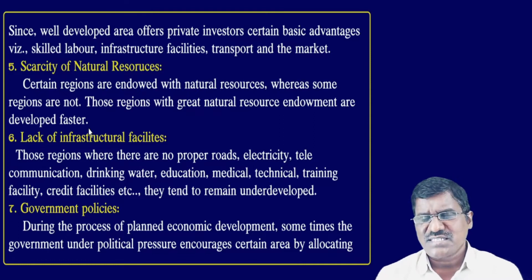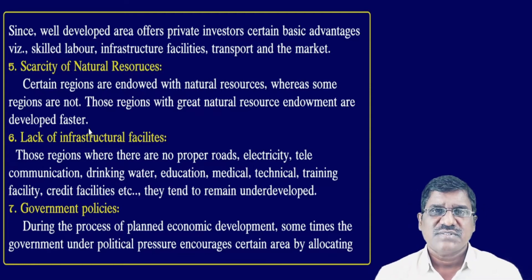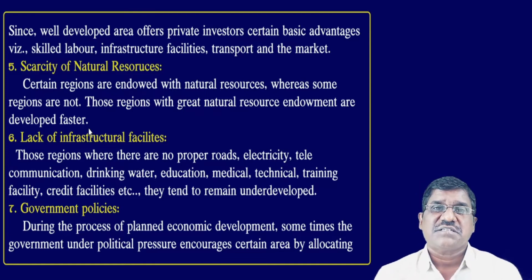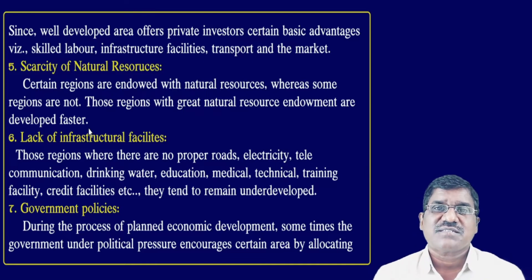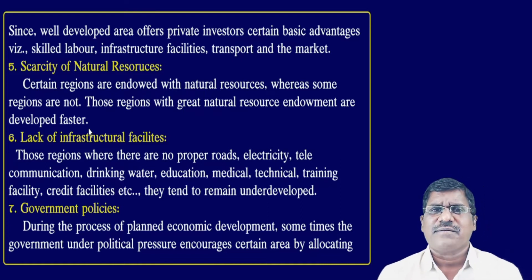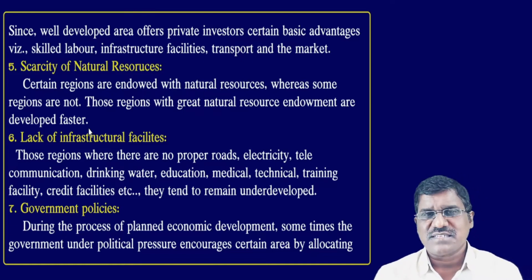The sixth cause is Lack of Infrastructure Facilities. Due to lack of infrastructure, most areas are underdeveloped, backward, and stagnant. Infrastructure includes road facilities, electricity, telecommunication, drinking water, education, medical, technical training, and credit facilities. Most villages and rural areas do not have proper infrastructure facilities. Due to this, these villages and rural areas fall far behind in development. Lack of infrastructure facilities is a major cause of regional imbalances in India.